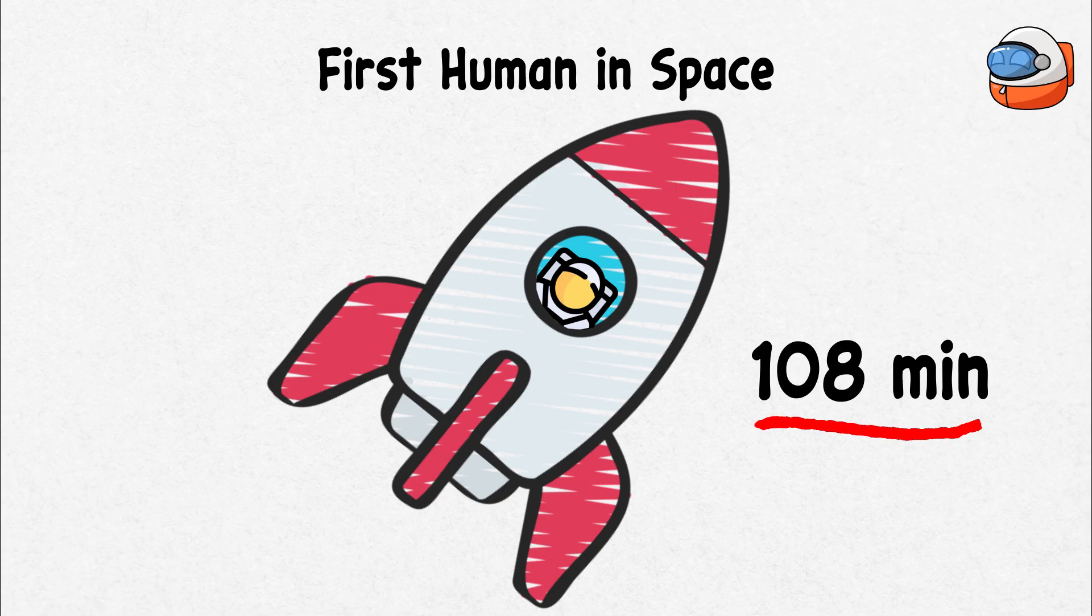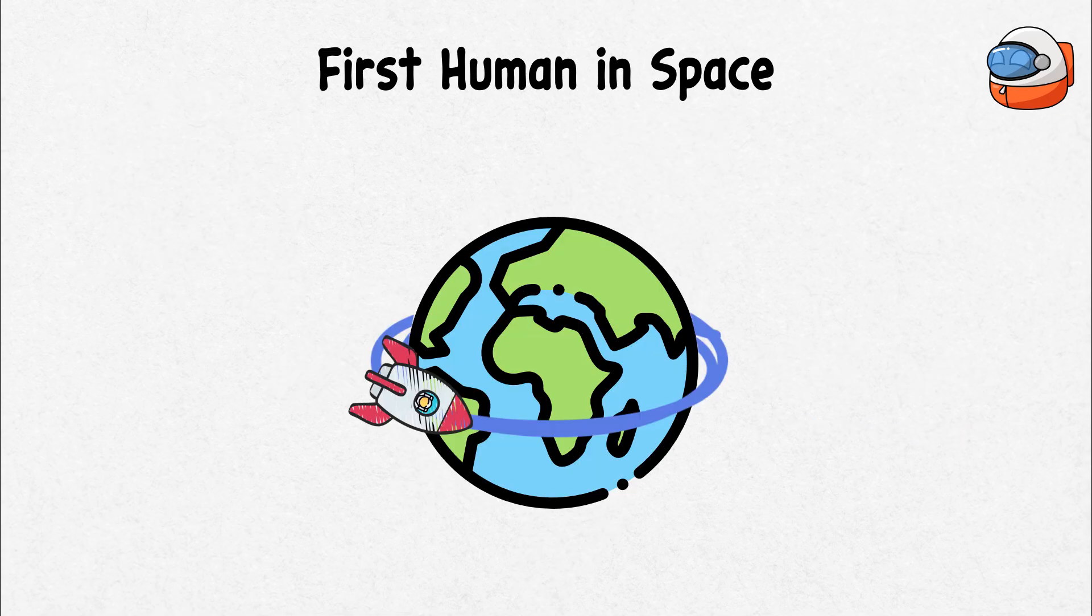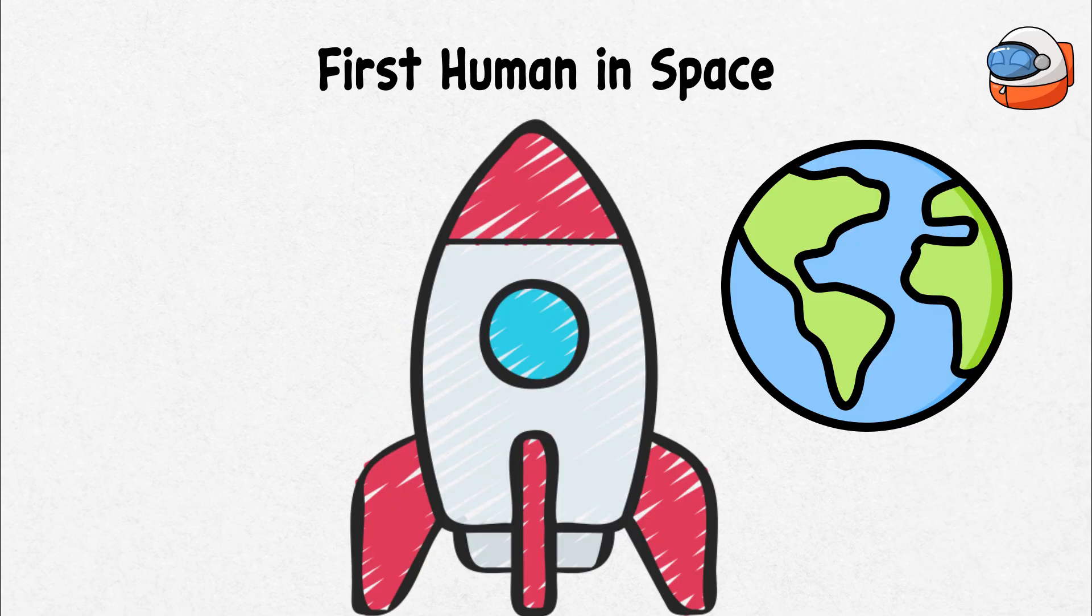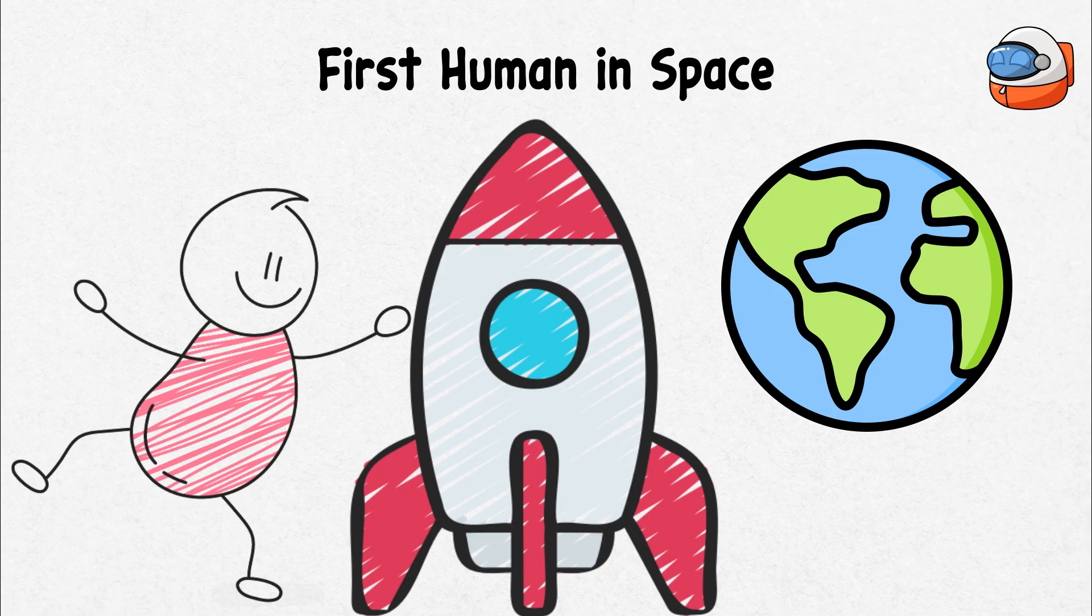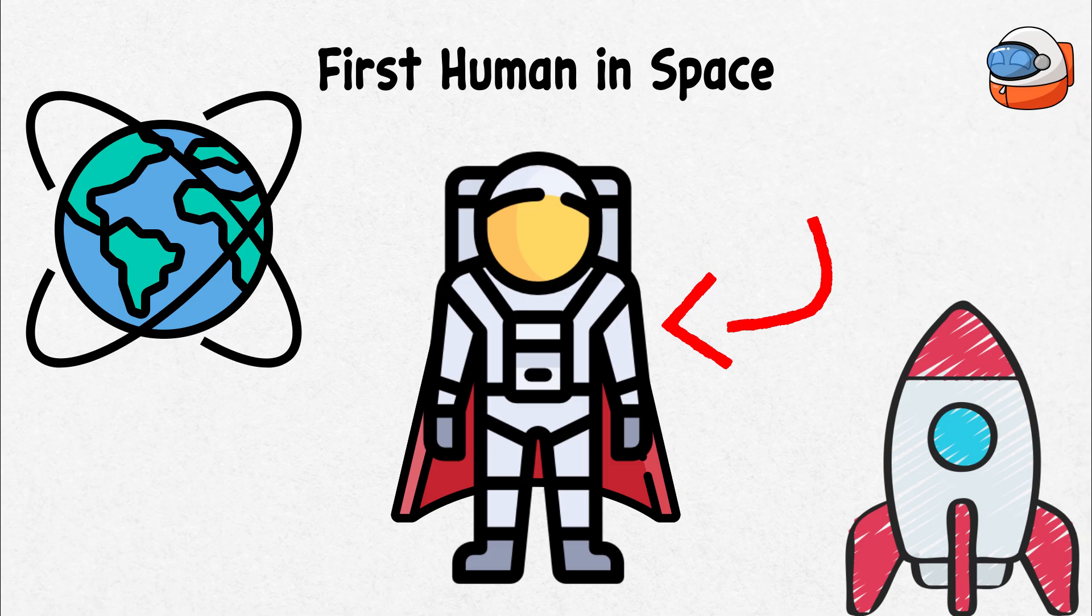His flight lasted just 108 minutes, but it was a journey that changed everything. He orbited the Earth once, making history with every second. Gagarin's safe return to Earth was met with celebration and relief. He became an international hero overnight. His incredible journey marked the dawn of human space travel.